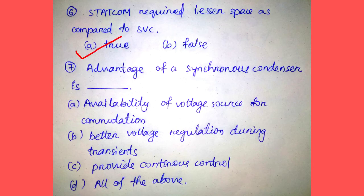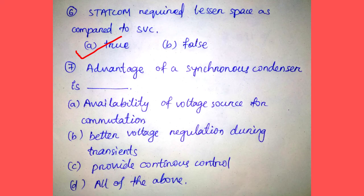Question number seven: The advantage of a synchronous condenser is — Option A: availability of voltage source for commutation, Option B: better voltage regulation during transients, Option C: provides continuous control, Option D: all of the above. The synchronous condenser has all three advantages: availability of a voltage source for commutation, better voltage regulation during transients, and continuous control. So the correct answer is Option D, all of the above.